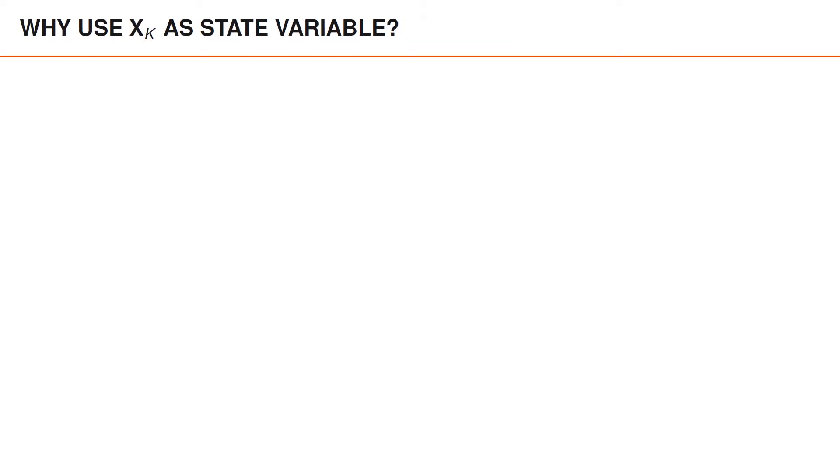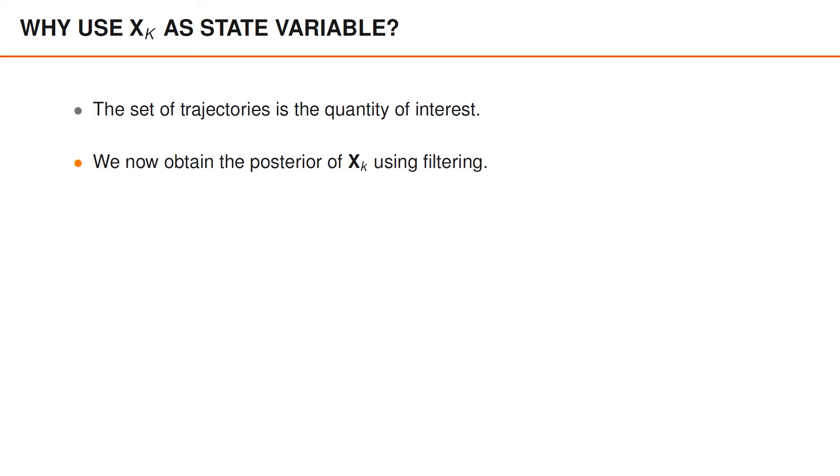Let us conclude this video with some of the key arguments for using random finite sets as state variables to perform multi-object tracking. First of all, the set of trajectories is the quantity of interest. By using the set of trajectories as a state variable, we obtain the posterior distribution of the quantity of interest directly from the prediction and update equations. We can of course use other algorithms to compute the posterior distribution over the set of trajectories, but those methods are beyond the scope of this course.